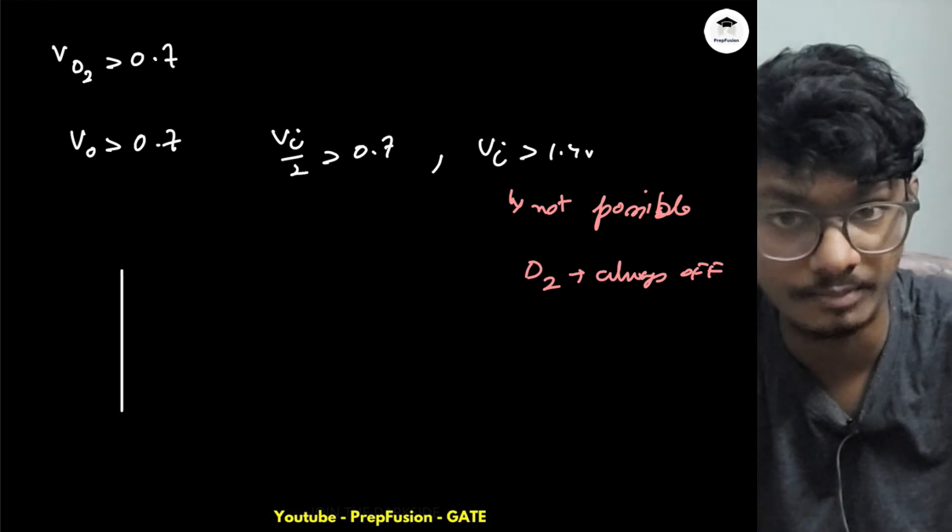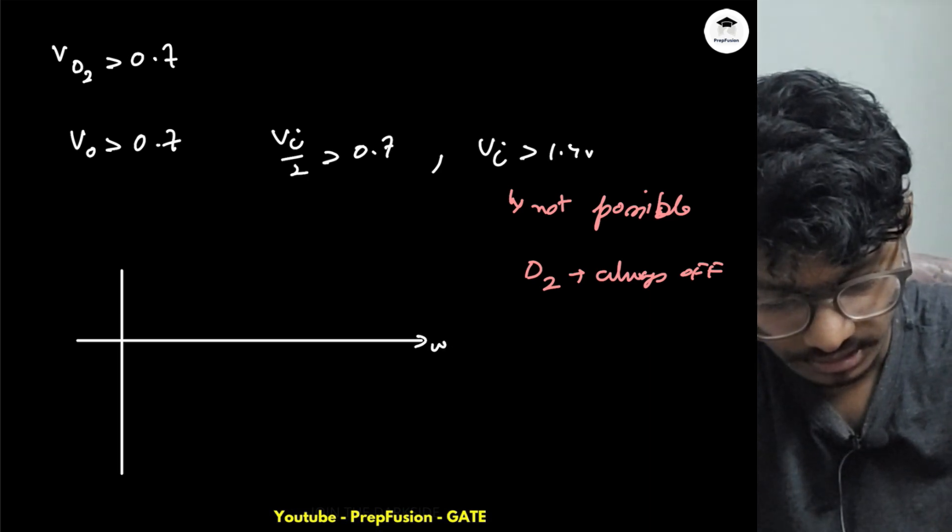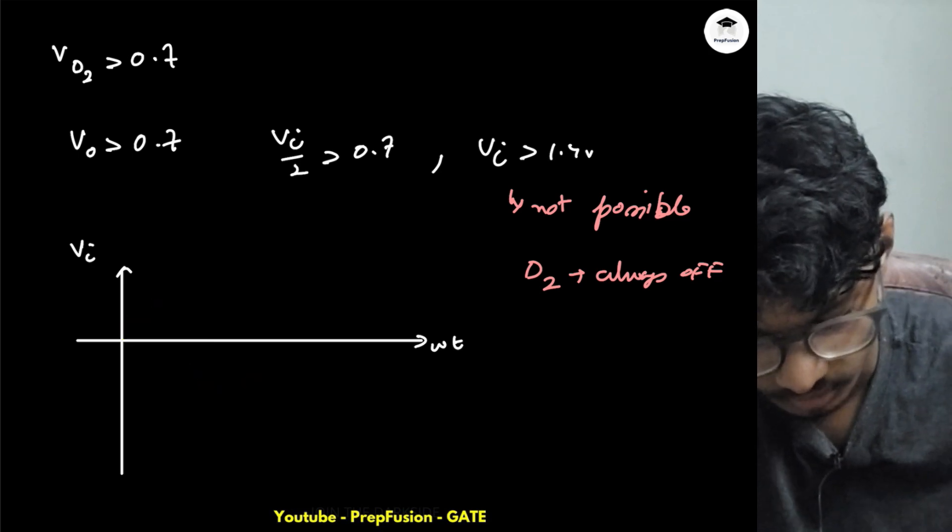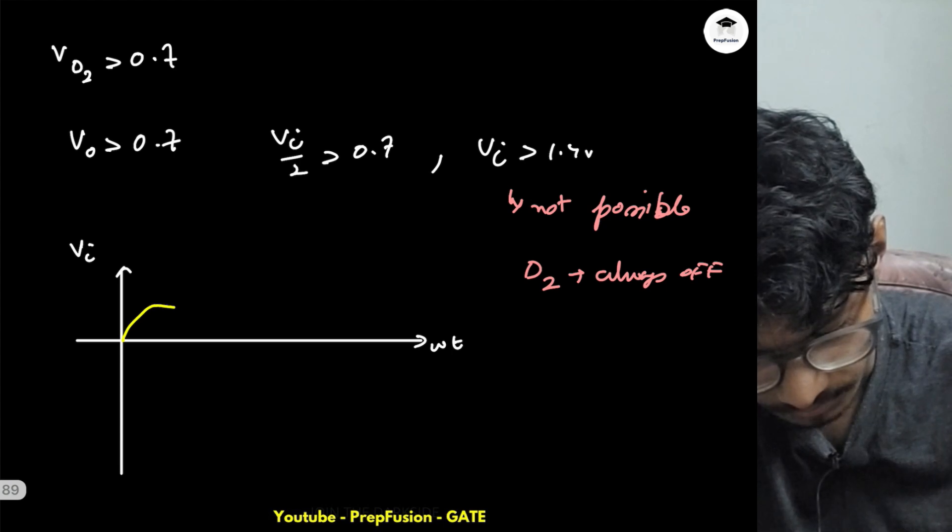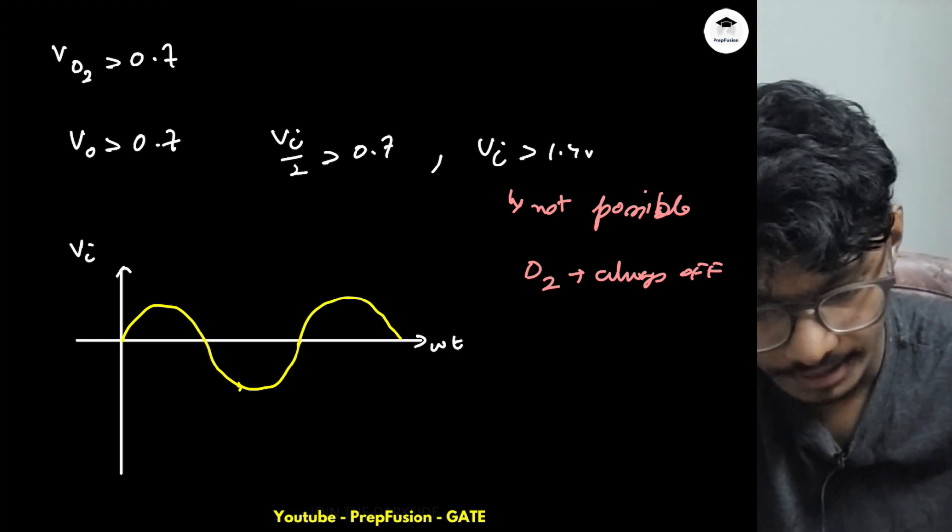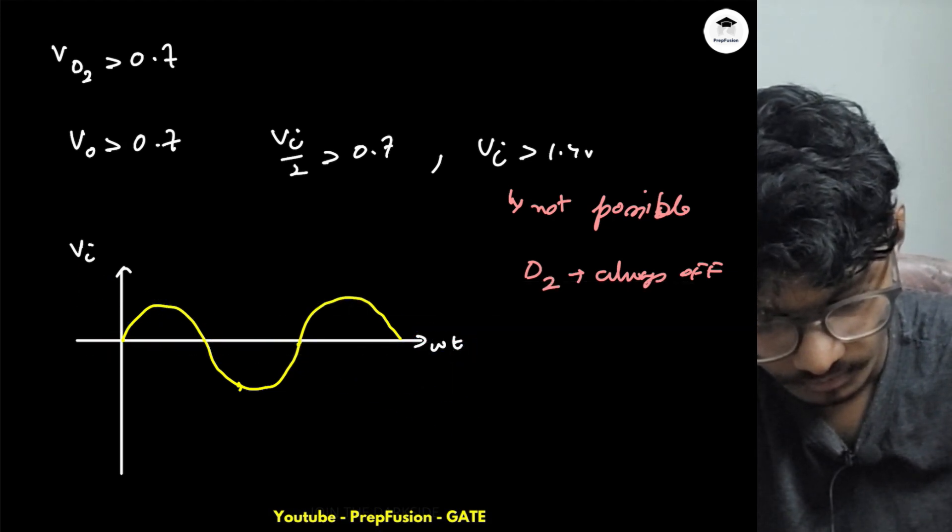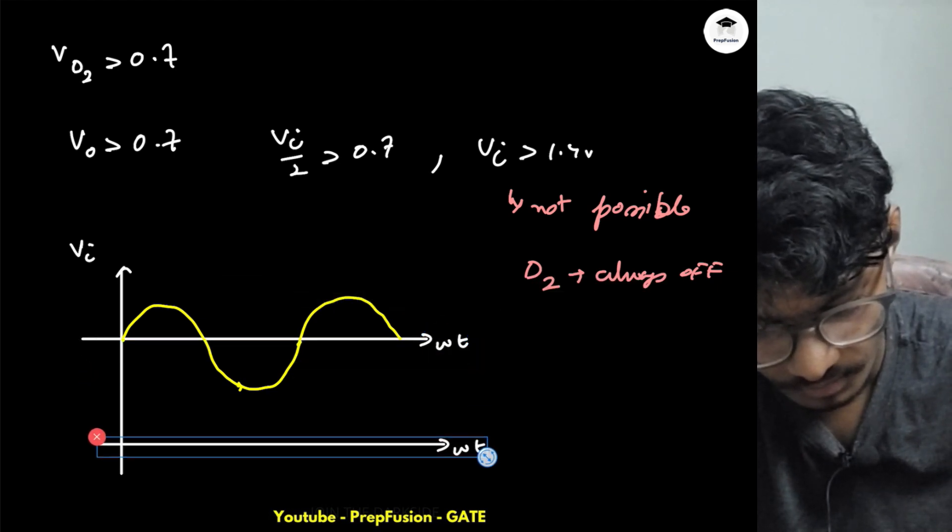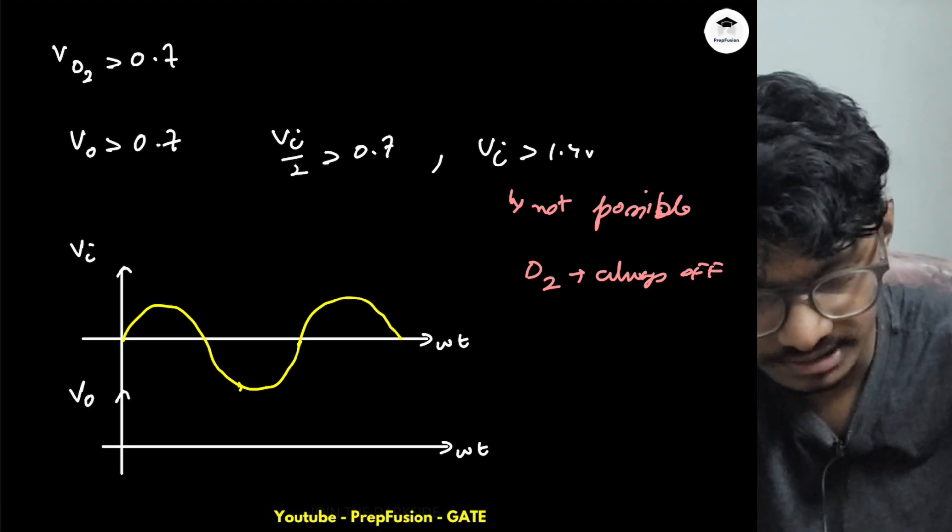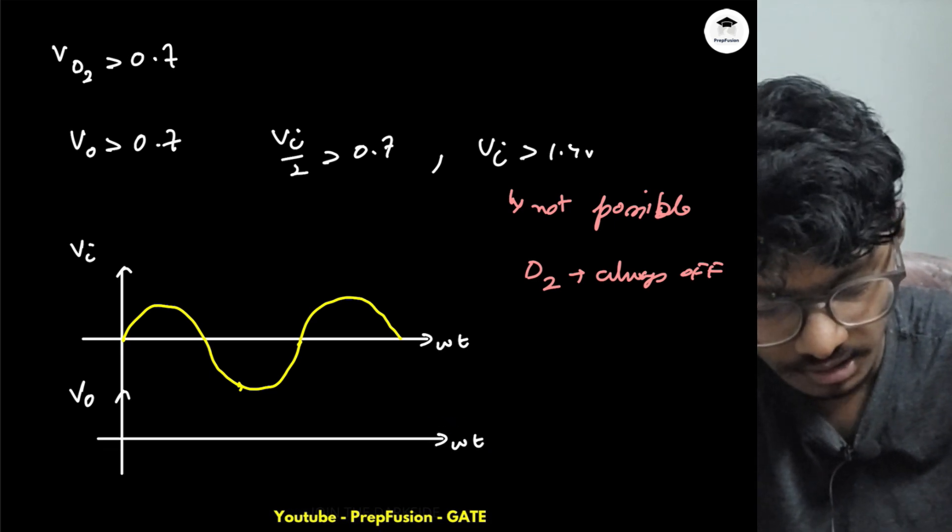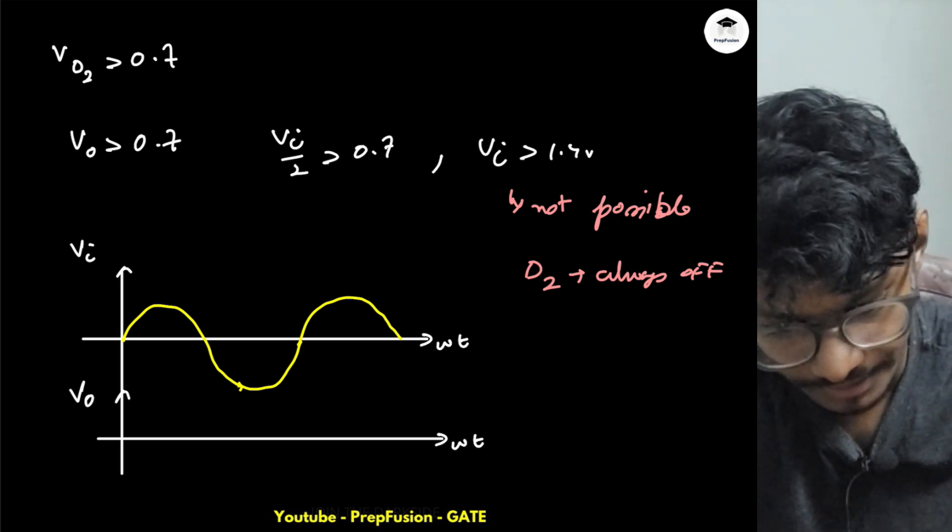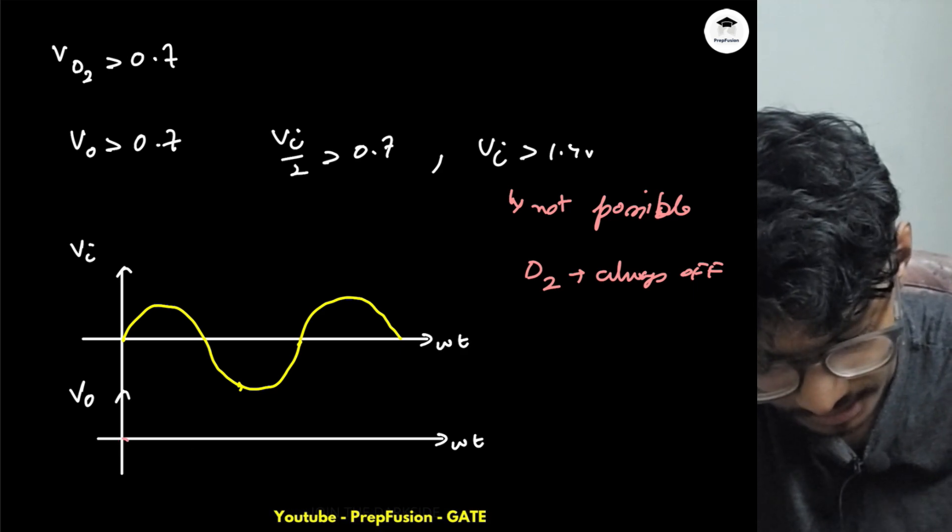How will my output voltage look like? I will compare it with respect to the input voltage. The input voltage is a sine waveform with a peak of one volt. Vo will be the inverted version since both the diodes are always off. Our assumed state was actually correct. Vo will be the inverted and attenuated version because Vo is Vi/2. The peak will reduce by half, so it will be totally inverted and its peak also will be lesser.